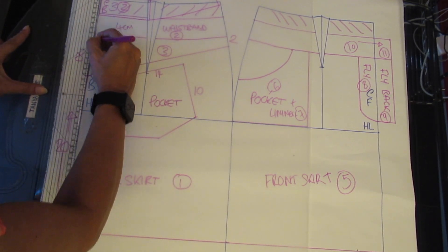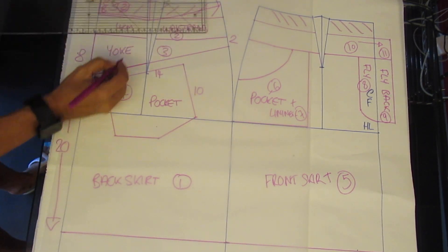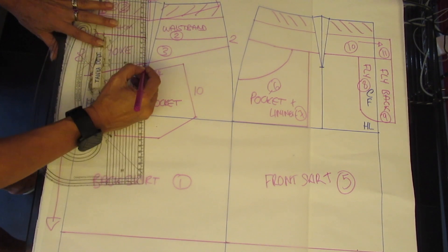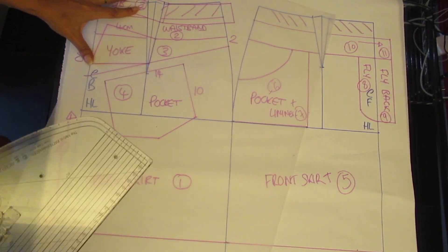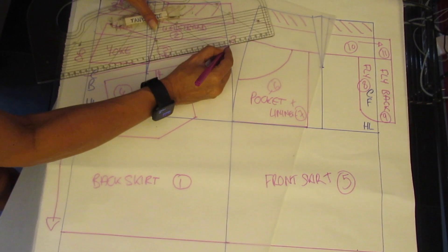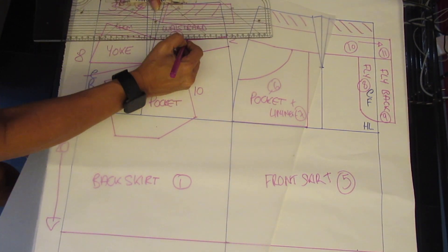In a minute you will see with the seam allowance. So you trace off the centre piece to the left side of the dart. Move the pattern piece, trace off the right side on the opposite side dart.